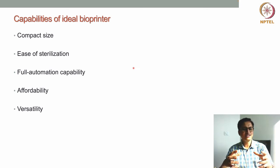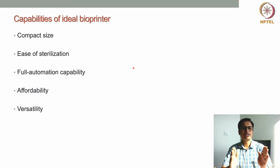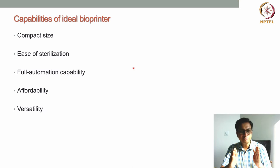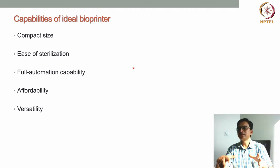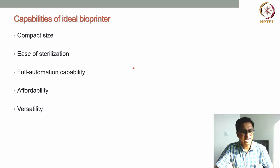The bioprinter should also have a compact size. If the size is huge, it cannot be kept inside a sterile room. For clinical translation, the bioprinter should be kept inside a clean room or GMP facility so that the tissue printing process can be done under GMP conditions. A compact size means less space is needed and it can be accommodated inside a biosafety cabinet.